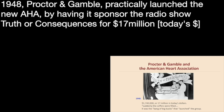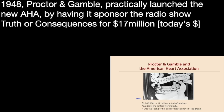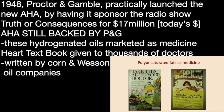Procter & Gamble had, back in 1948, virtually launched the American Heart Association by making it the recipient of a radio show called Truth or Consequences, handing it what would be today $17 million overnight. It had a lot of backing from Procter & Gamble, and last time I checked, it still did. This enabled vegetable oils to become like medicine — they were marketed as medicine.